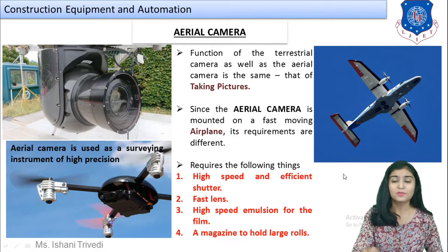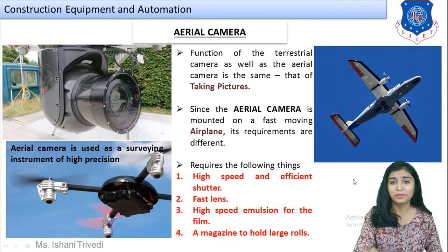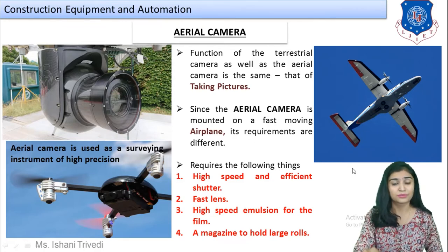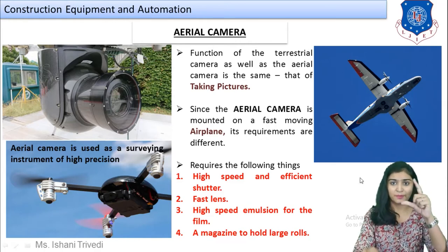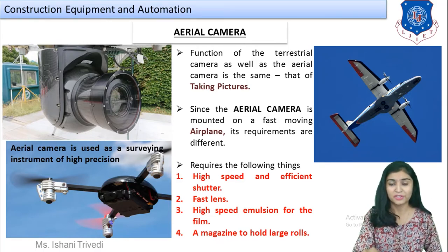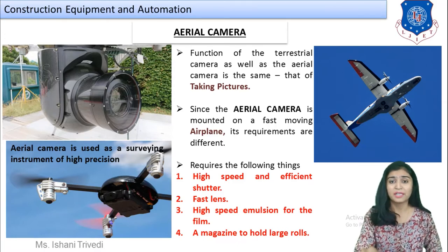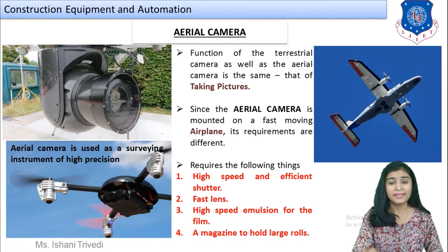Since photographs are taken from a fast-moving aircraft at very high speed — hundreds to thousands of photos can be clicked in one go — the first requirement is a high-speed and efficient shutter. The shutter is the part of the camera that closes and opens while taking a photograph. The second requirement is a fast lens, because within a fraction of a second one photograph must be captured, requiring very high resolution.